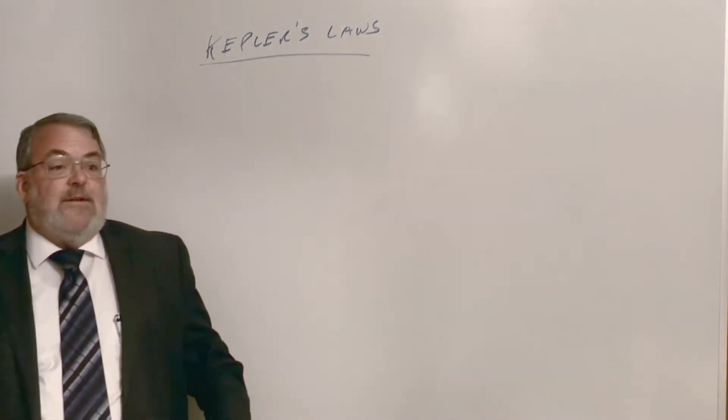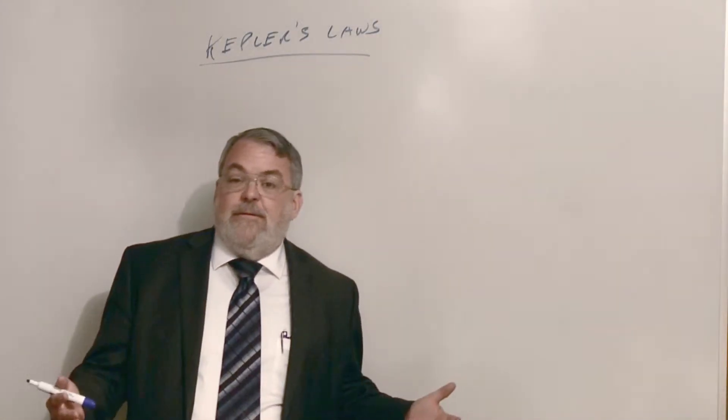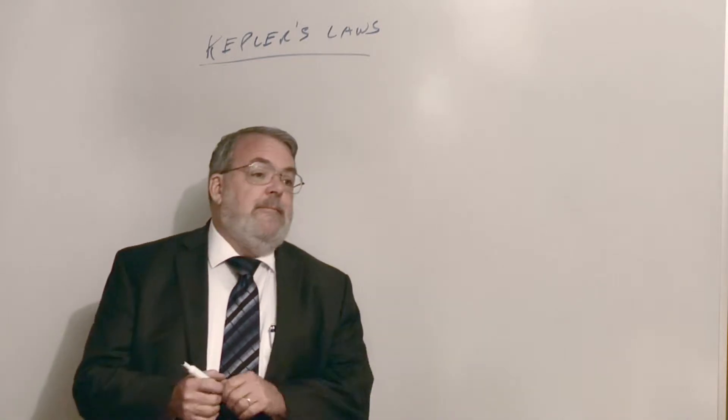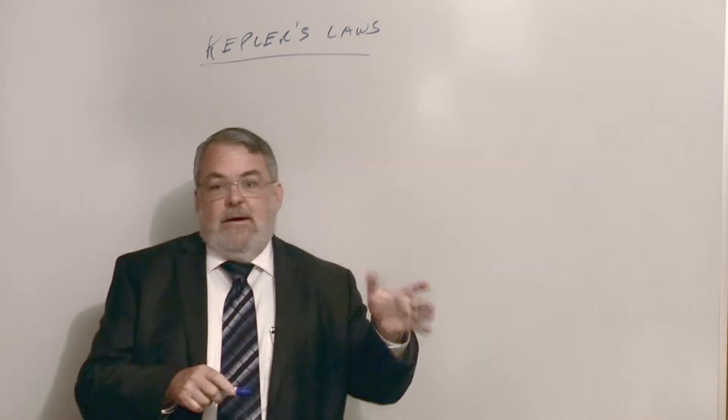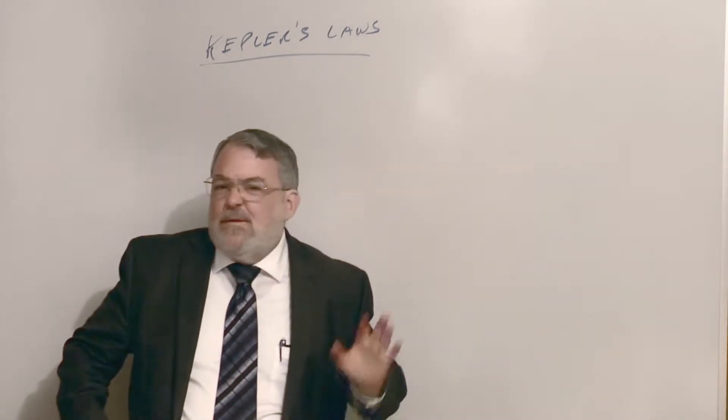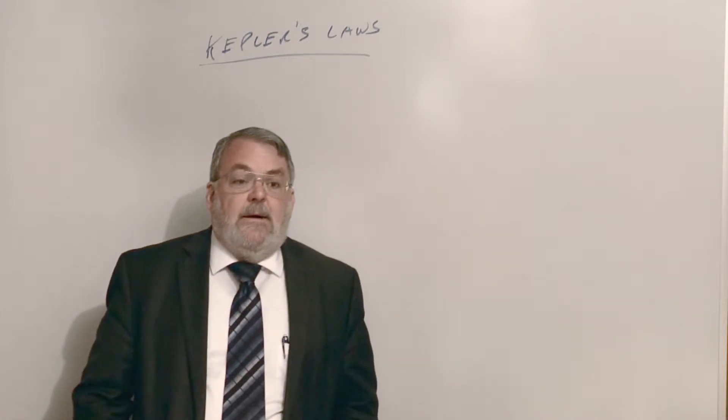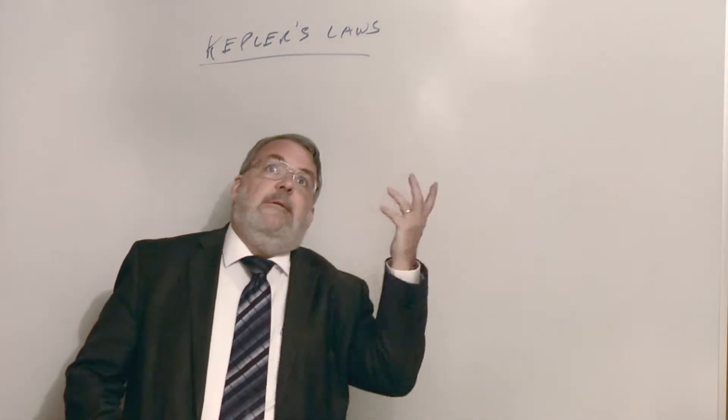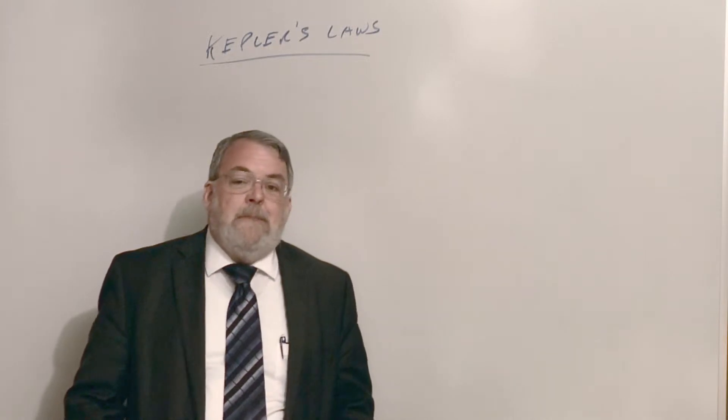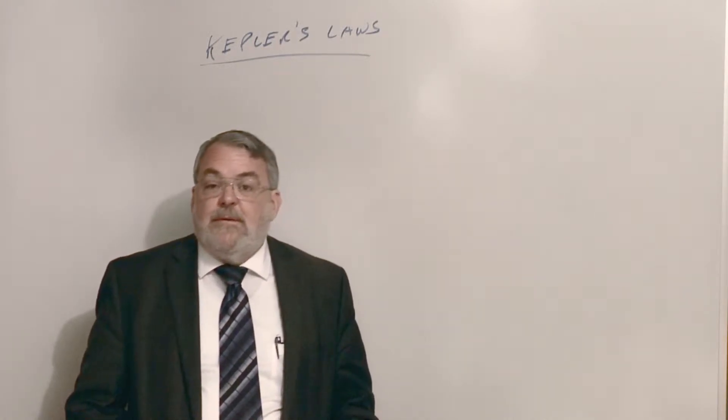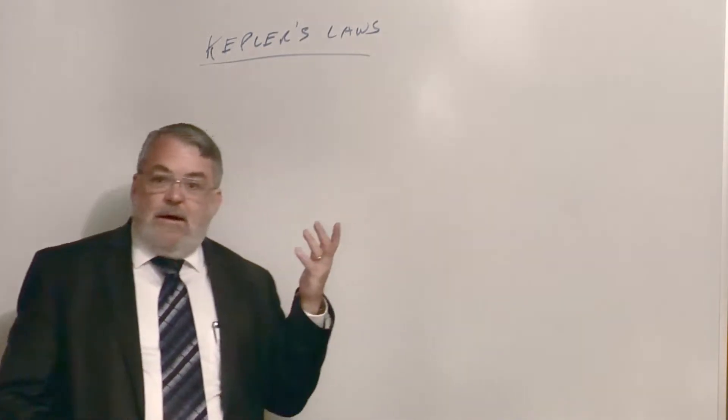Johannes Kepler was the last great astronomer before the invention of the telescope. He lived around the 1590s, early 1600s, back in the days when astronomy was just looking at the sky with your eyes. Astronomers and scientists were always trying to figure out what's going on up there.